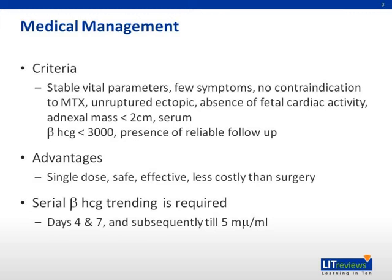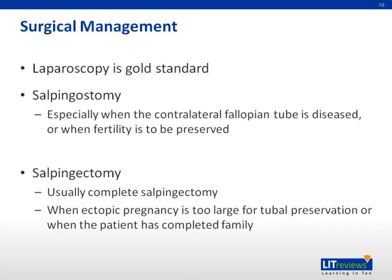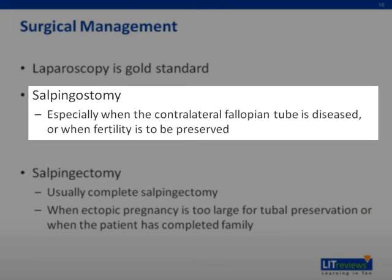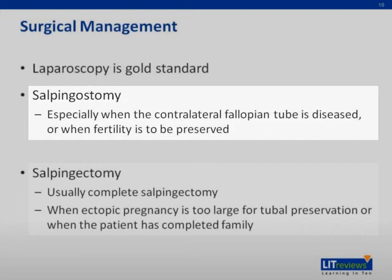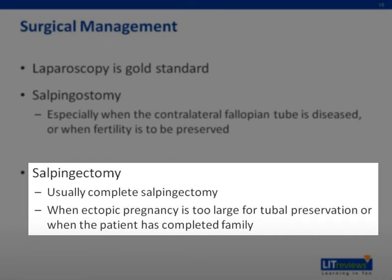However, compliance to serial beta-HCG trending is necessary, performed at days 4 and 7 after administration, and subsequently until levels are less than 5 microunits per milliliter. Surgical management is the mainstay of treatment, and laparoscopy is the gold standard. Salpingostomy is performed especially when the contralateral fallopian tube is diseased or if fertility is to be preserved. Salpingectomy is performed when the ectopic is too large for tubal preservation or when the patient has completed her family.